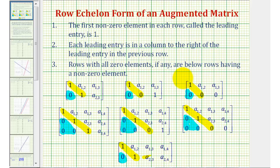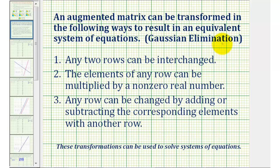It's important to notice that if we focus on the main diagonal, highlighted in yellow, most of the elements in the main diagonal are one — however, they can also be zero if the system has either no solution or infinite solutions. Also notice that all elements below the main diagonal are zero. This gives us a strategy for transforming the matrix. The process is called Gaussian elimination: any two rows can be interchanged, any row can be multiplied by a non-zero real number, and any row can be changed by adding or subtracting corresponding elements with another row.